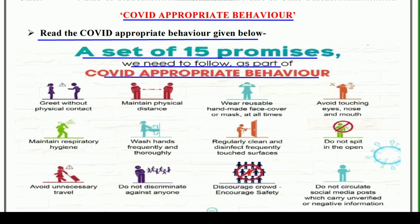So, sabse pehle hum dekhte hain. Yaha par kuch figures diye rakhe hain, unke through hume sikhaya gaya hai ki aakhir hume karna kya hai — COVID ke dauran hume kis prakar se apna behavior rakhna hai. Jo sabse pehla hai woh hai: greet without physical contact. Yani jab bhi hum kisi se milein, toh use bina physical contact kiye milein. Pehle hum jaate the aur handshake karte the, apne friend se ya kisi se bhi. Lekin ab sabse badhiya iska tarika hai — hamaara Bharatiya tarika — aap namaste kijiye. Jisse bhi aap milte hain, use namaste kijiye. Isse aap use physical contact nahi kar payenge jab use ko aap greet kar rahe ho.